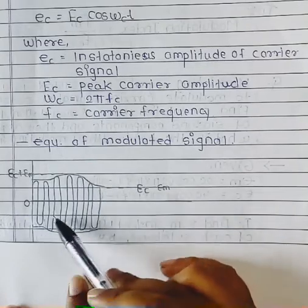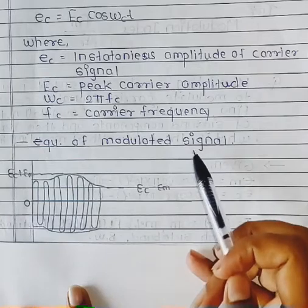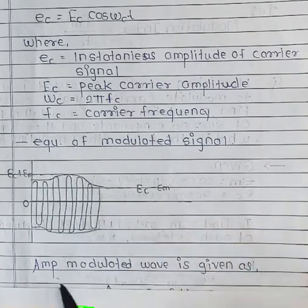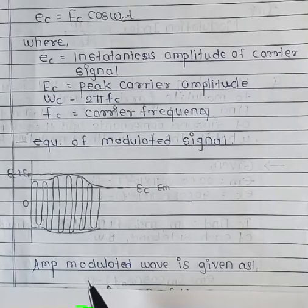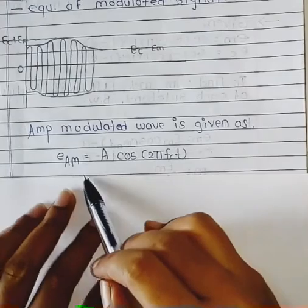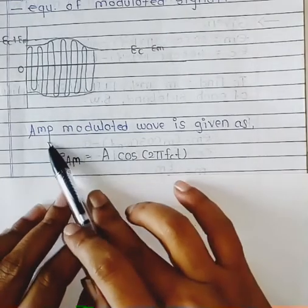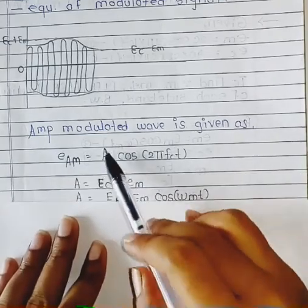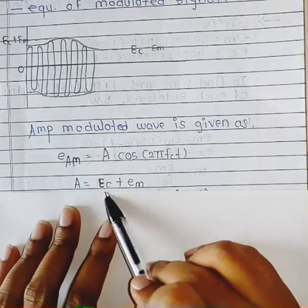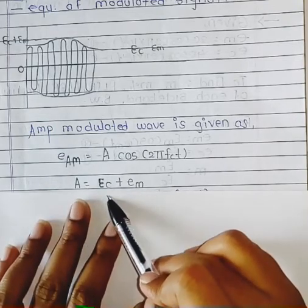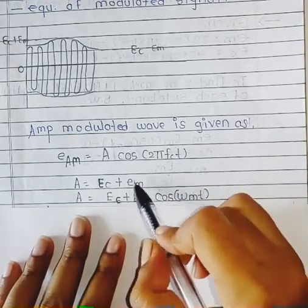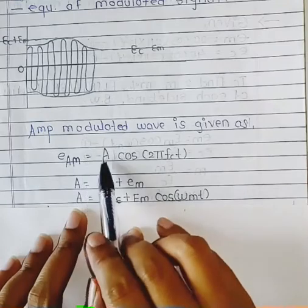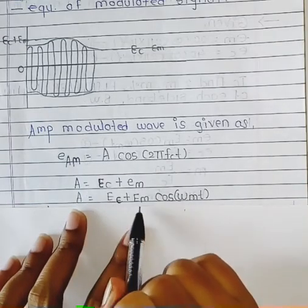This is the diagram for the combination, that is the modulated signal. The amplitude modulated wave is given as: small AM equals A cos(2π f_c t). In this, capital A is the combination of the modulating signal and carrier signal. So capital A equals capital E_c plus small e_m, meaning A equals E_c plus e_m.